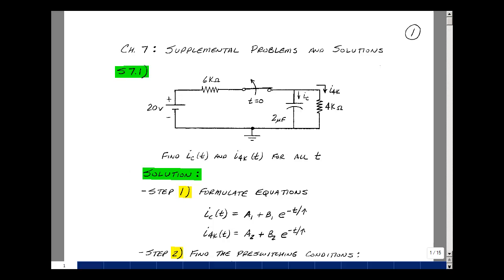This lesson deals with supplemental problem 7.1. You can find this problem in the ECE 201 ebook in the Chapter 7 supplemental problem starting on page 1. Given this one capacitor circuit with a switch that opens at time t equals 0, can you solve for the capacitor current as a function of time and the current in the 4k resistor?